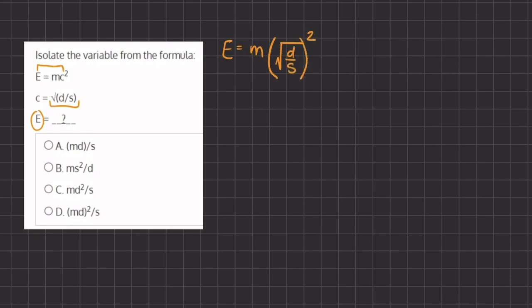Now when you have something in a square root and also raised to the power of 2, they cancel each other out. So it's going to look like this: we're going to have E equals m times d divided by s. So there is no more square root, there is no more squared, there is no more to the power of 2, because they canceled each other out.